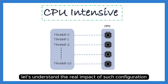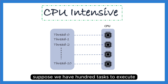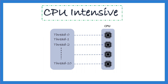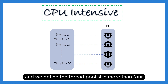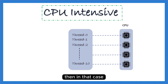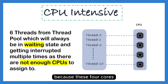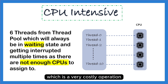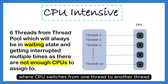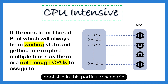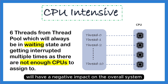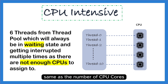What happens if we declare a thread pool size greater than the number of cores for CPU-intensive tasks? Suppose we have 4 CPU cores and define a thread pool of size 10. Then 6 threads from the pool will always be in a waiting state, getting interrupted multiple times because there are not enough CPUs to assign to them. These 4 cores need to manage 10 different threads, causing a lot of context switching — a costly operation where the CPU switches from one thread to another. Using a higher thread pool size in this CPU-intensive scenario has a negative impact on overall system and application performance. The ideal thread pool size is the same as the number of CPU cores.